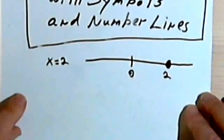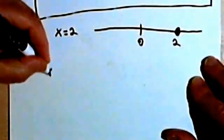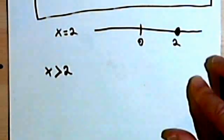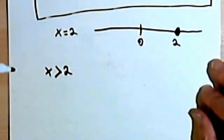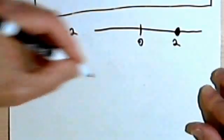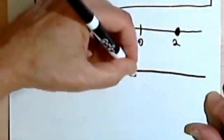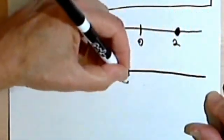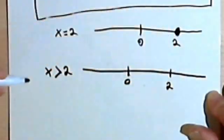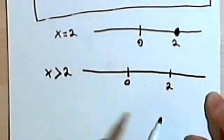Now instead of that, what if I have something like x is some number that's greater than 2? In other words, x could be 3 or 4 or 5 — it could be 2 and a half. Let's try a number line again. Let's mark where the 2 is, so x could be any number that's bigger than 2.